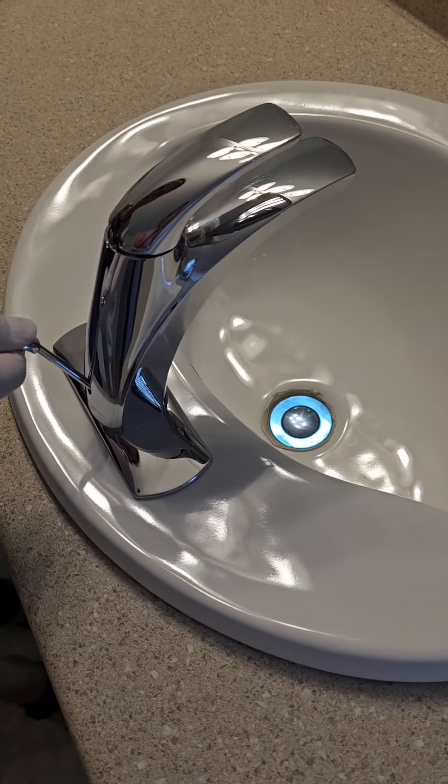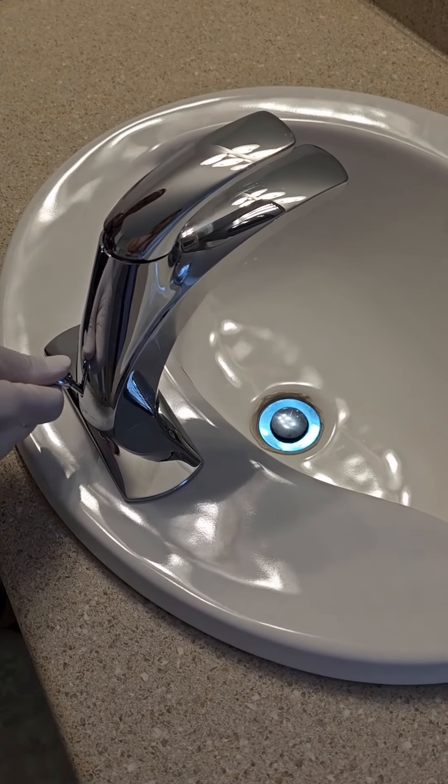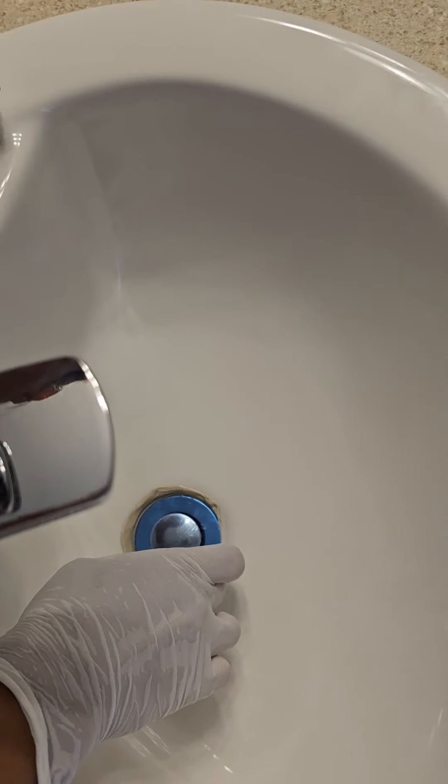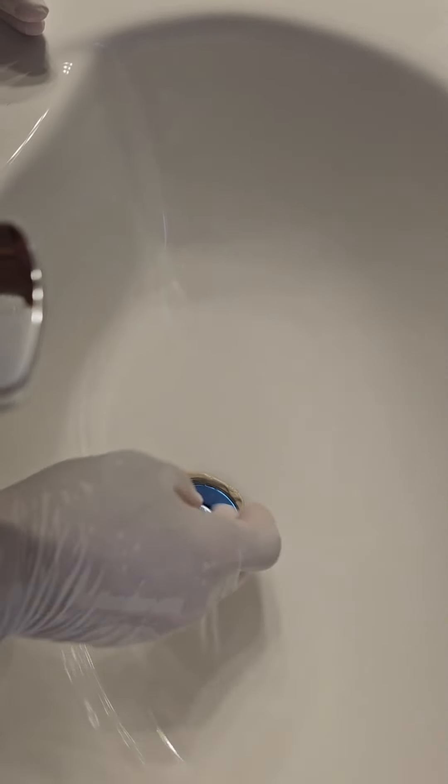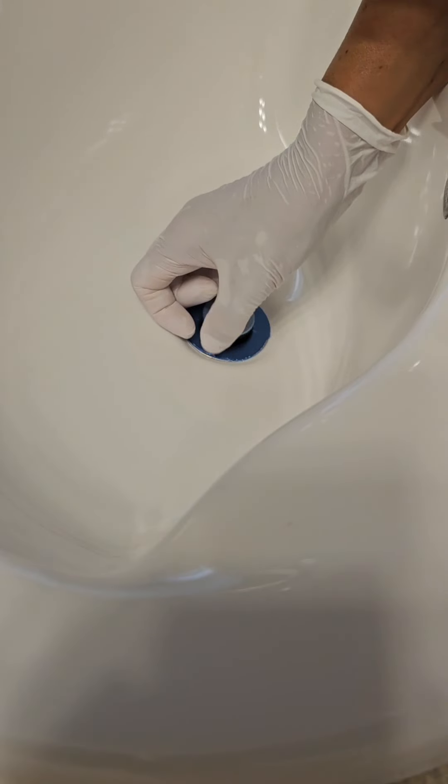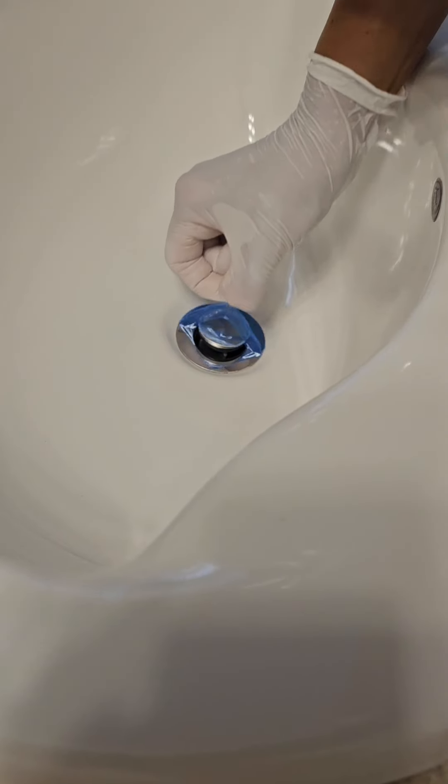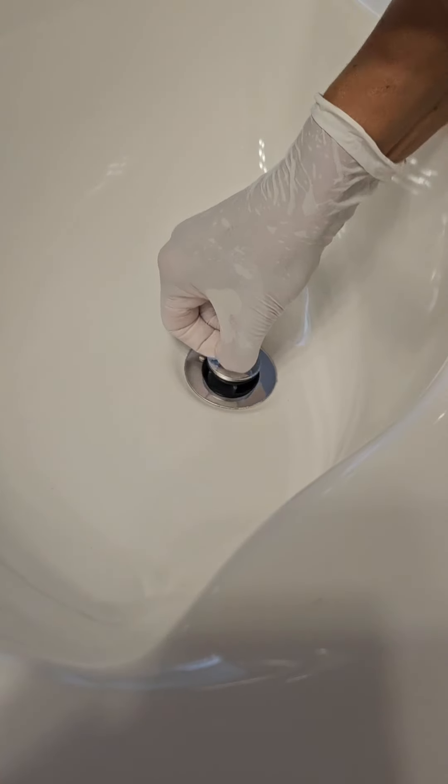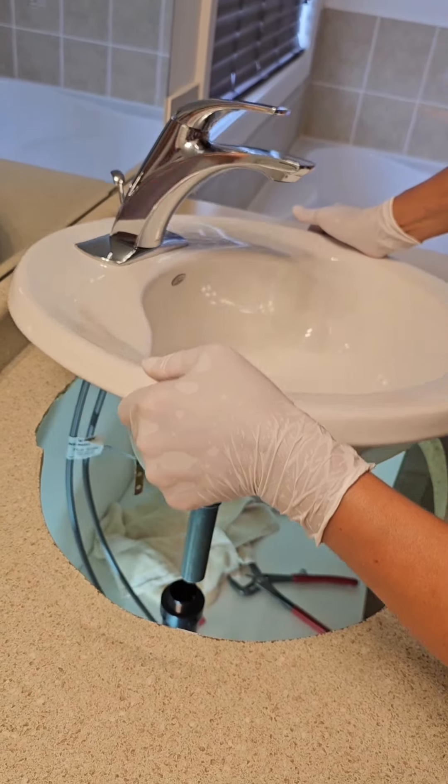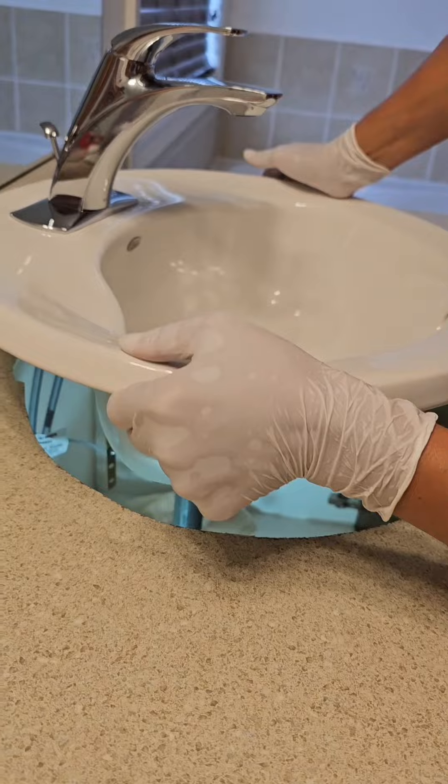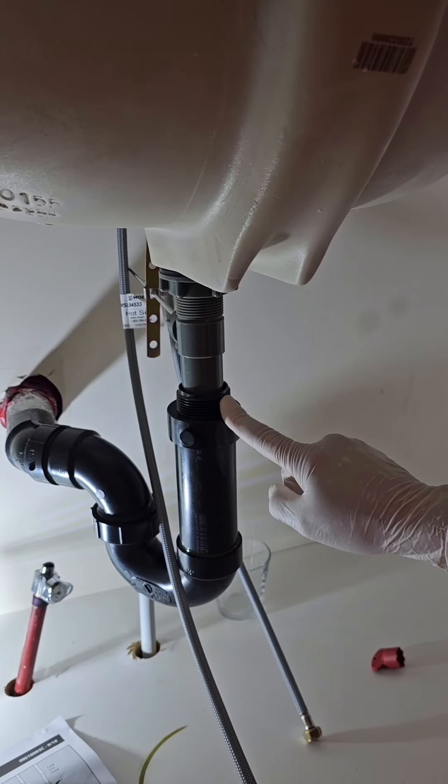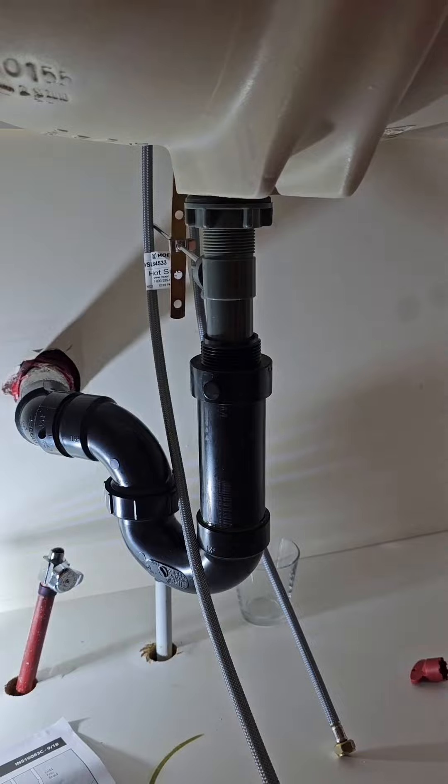The faucet is now fully installed on the sink. Clean off any excess plumber's putty. Clean off the film from the flange and stopper. Lift the sink, rotate it, and carefully position it back on the counter. Make sure to align the pipes correctly.